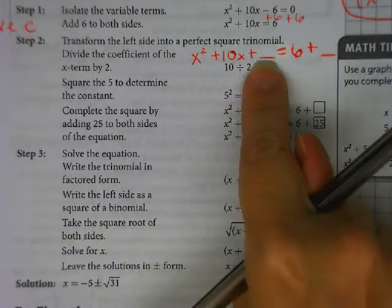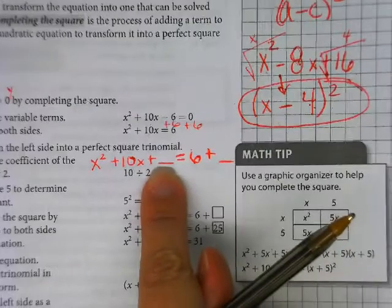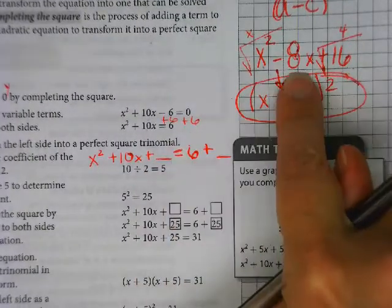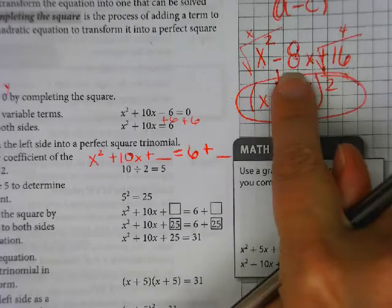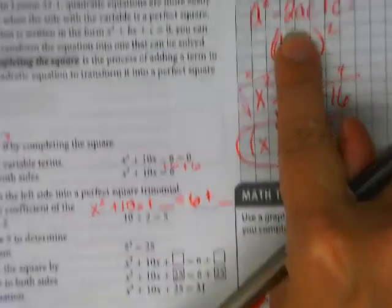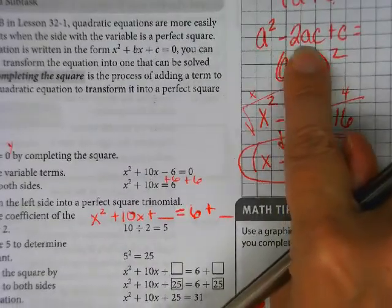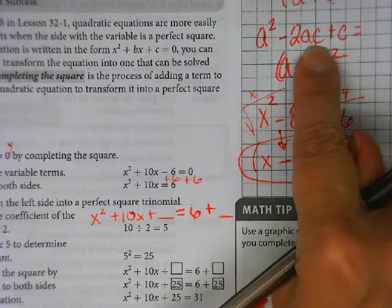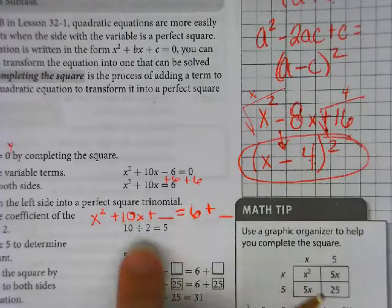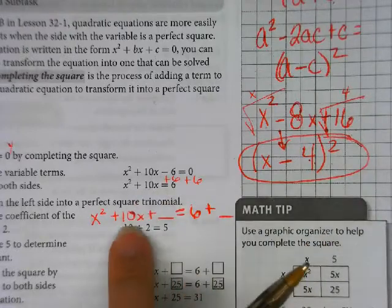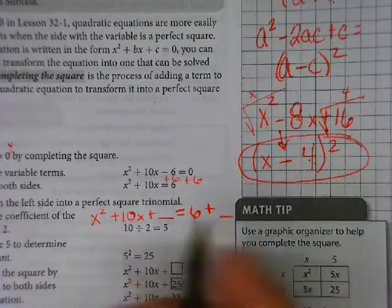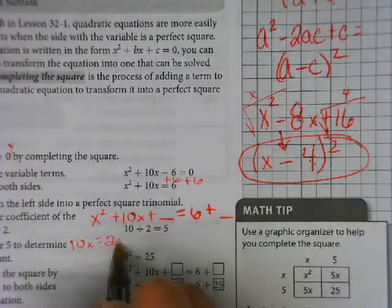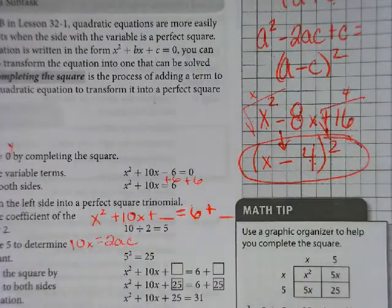Now in order to find C, I'm going to go refer back to my example up here. We know that B is two times whatever the square root of A was times whatever the square root of C was. So this 10X right here, 10X equals two times A times C. Do you see that?